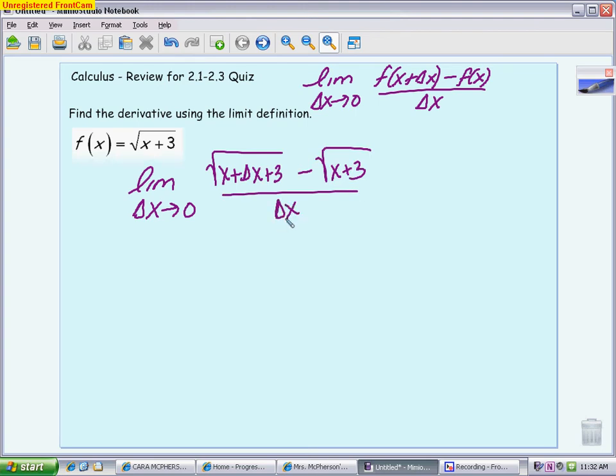I mentioned in class you will definitely have a situation where you're going to be required to rationalize, which is exactly what this is. So you're going to multiply by the conjugate, square root of x plus delta x plus 3 plus the square root of x plus 3 over itself.